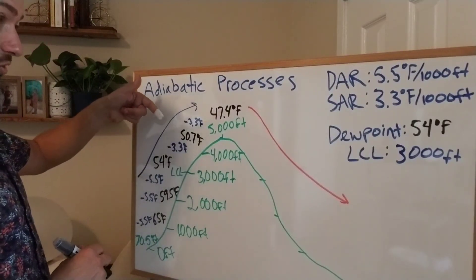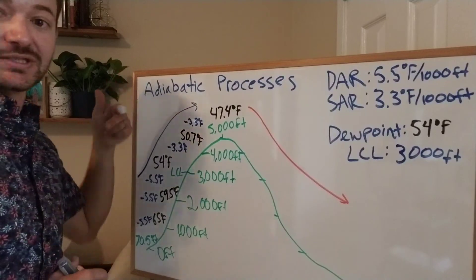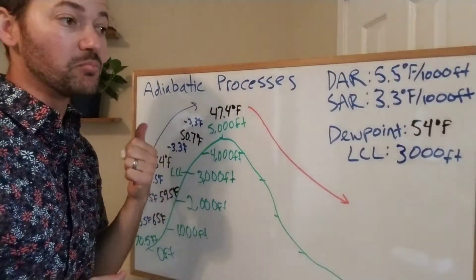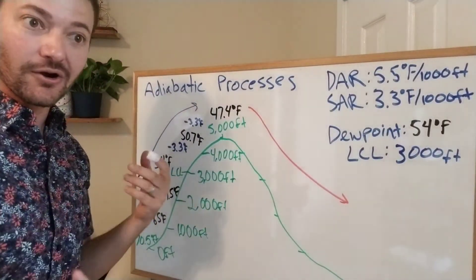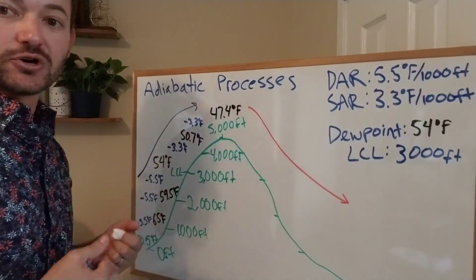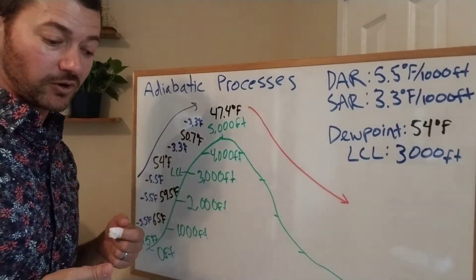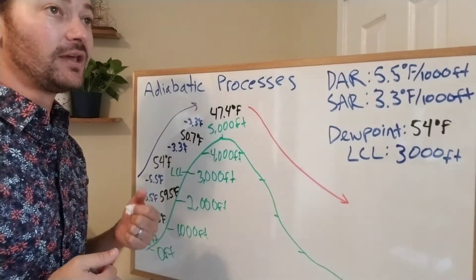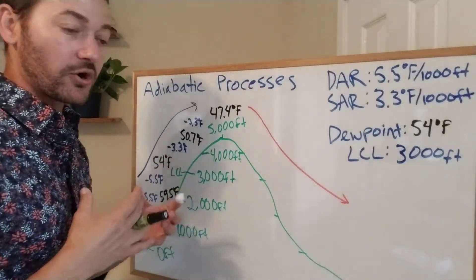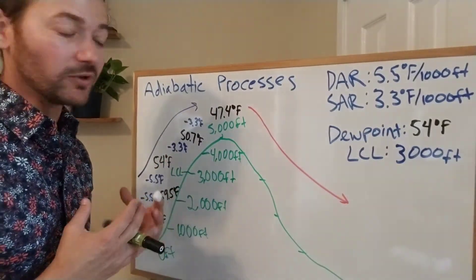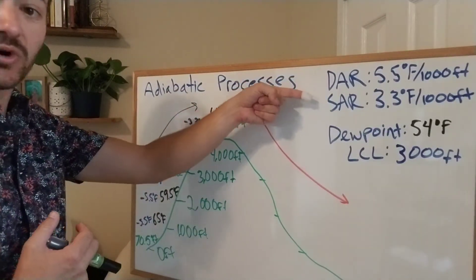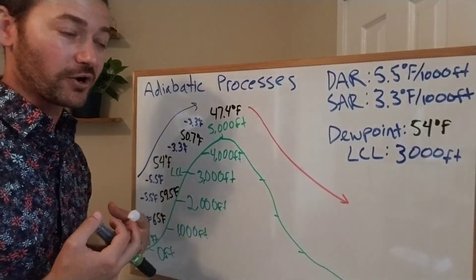Why do we subtract 3.3 instead of 5.5 once it's saturated? It's because water holds onto thermal energy better than dry air does — just like we discussed with maritime climates versus continental climates. Once the air is saturated, it cools off more slowly because it's full of water.